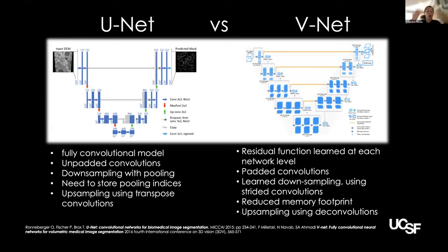Before U-Net, if you wanted to use machine learning for segmentation, you would define your problem as a classification problem, probably using a sliding window into your image to classify the central voxel or central pixel. The U-Net model is 100% end-to-end: you have a full image as input and a full image as output. It has an encoding and a decoding path — in the encoding path you build a representation, and then you reconstruct into a full dense segmentation mask.